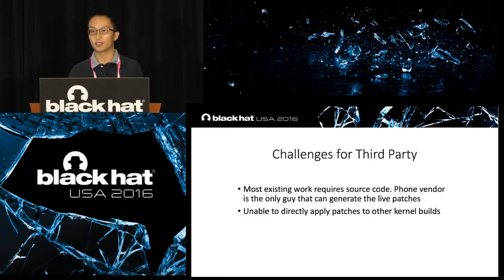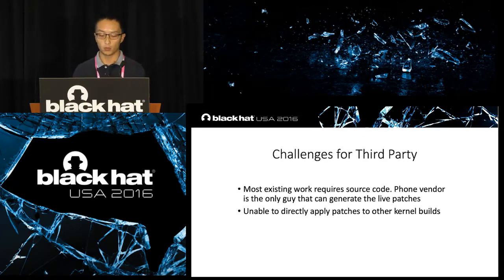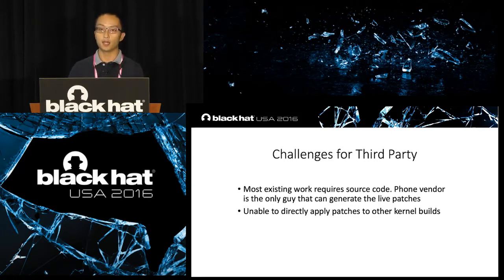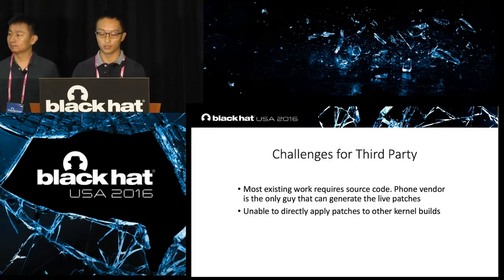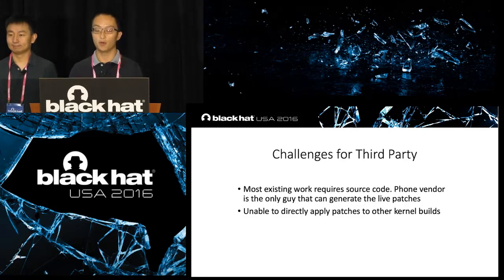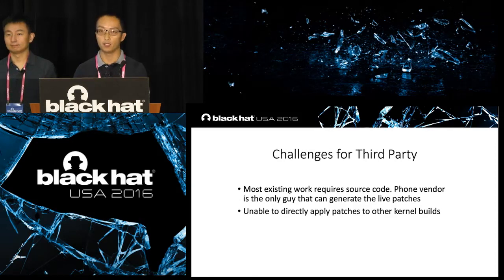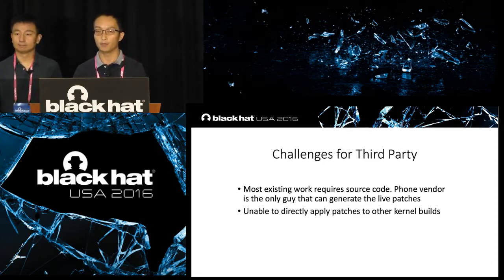Although we have many choices out there, we still have challenges that prevent using live patching to face all the problems described. The first challenge is that most existing work requires source code. They use two copies of source code — one vulnerable and one fixed — compile two binaries, generate the diff, and use the diff as the new function to apply to the kernel. But a third party cannot access the exact copy of the source code of every phone. Even if they have the exact source code, they cannot apply a patch compiled for one phone to another phone.